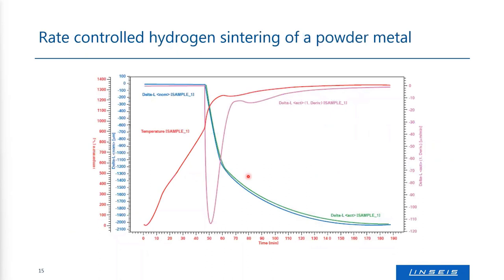The sintering process can be optimized using special software called rate-controlled sintering software. The length change or density of the sample is programmed — you enter the desired density profile, and the furnace regulates the temperature to achieve it. This can optimize the production process to achieve the highest possible density and save energy costs by avoiding unnecessarily high temperatures.